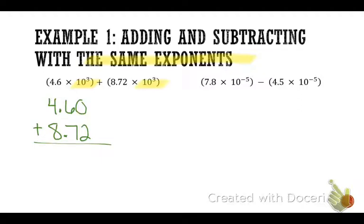Go ahead and add those two together. You can just do it by hand, we're not doing a calculator. It's just basic math. So two, and then a 13, and then a 13. So I get 13.32 times 10 to the third power. Does everybody see how I got 13.32? This is not your final answer.